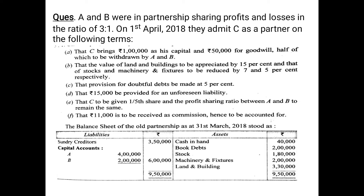Asset side: cash in hand Rs 40,000; book debts Rs 2,00,000; stock Rs 1,80,000; machinery and fixtures Rs 2,00,000; land and building Rs 3,30,000. Liabilities side: sundry creditors Rs 3,50,000; capital accounts — A Rs 4,00,000 and B Rs 2,00,000, totalling Rs 6,00,000. The total of the balance sheet on both sides is Rs 9,50,000.